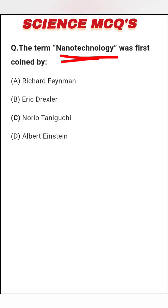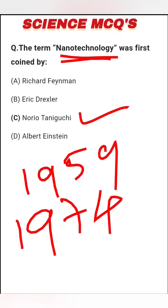The term nanotechnology was coined by Richard Feynman, Eric Drexler, Norio Taniguchi, or Albert Einstein. The right answer is option C: Norio Taniguchi. Feynman in 1959 proposed the idea, but Taniguchi in 1974 coined the word nanotechnology. So the right answer is option C.